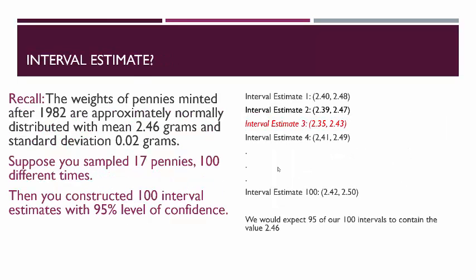Let me give you a visual of this. The weights of pennies minted after 1982 are approximately normally distributed with a population mean of 2.46 grams. Suppose you sampled 17 pennies repeatedly, and each time you constructed a point estimate and then developed confidence intervals. You do this 100 different times and construct 100 interval estimates with a 95% level of confidence. The first time, you say: I'm 95% confident that the mean weight of pennies minted after 1982 is between 2.40 and 2.48 grams — that interval got it right.